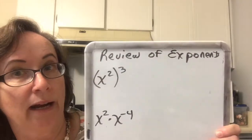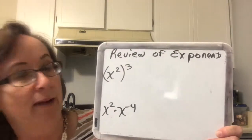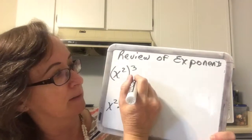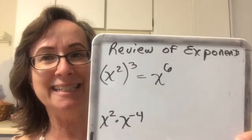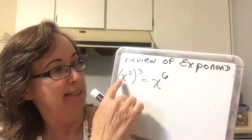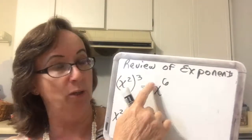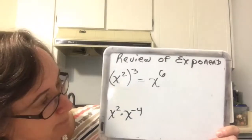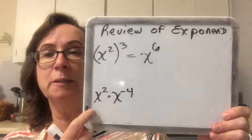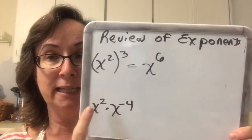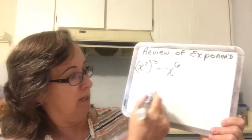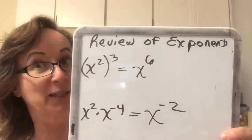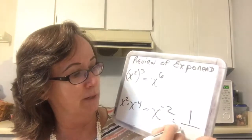Now we're going to start reviewing our exponent rules. Whenever I raise a power to another power, I multiply the two powers together, giving me x to the 6th. When multiplying like bases together, I add the two exponents. One is positive and one is negative, so I get x to the negative 2, which goes downstairs and becomes 1 over x squared.